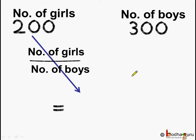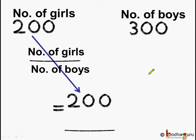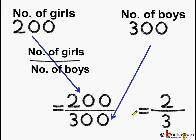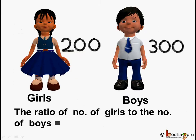200 goes in the numerator and 300 goes in the denominator, giving us 200 by 300. Now reducing it further, we divide both the numerator and denominator by 100 and we get 2 by 3. So what can we say?